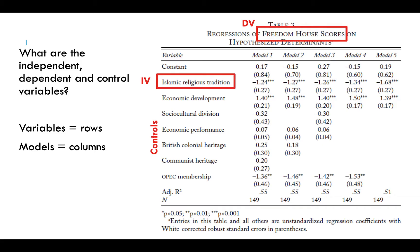Determinants just means independent and control variables, and you will often see regressions referred to in this way — a regression of the dependent variable on the independent variable. In political science we talk about effect before cause sometimes. So that's where we see the dependent variable here, which is a Freedom House score — it's a measure of democracy. Your independent and control variables will be found in the column on the left.